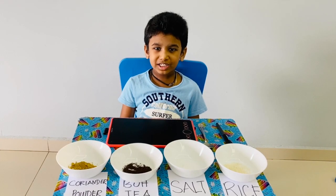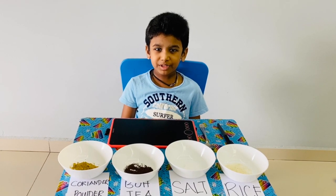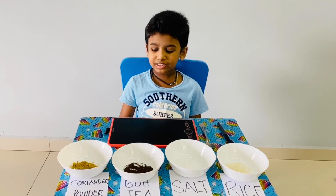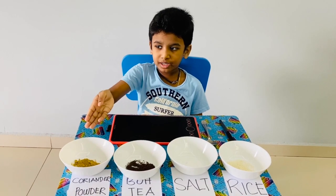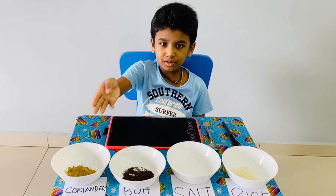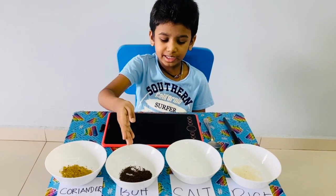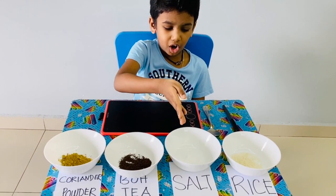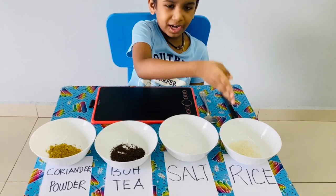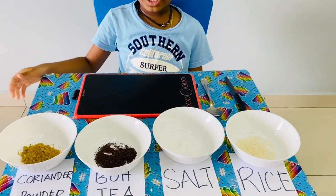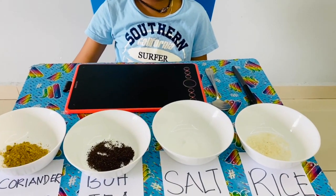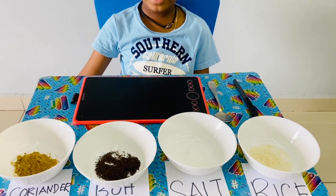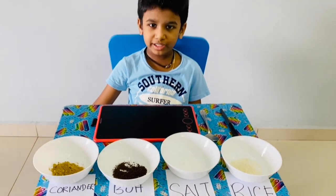Okay friends, now let's see together what we have. First, I have a coriander powder, tea, salt, and rice. Now let's pour water and mix together and see what happens to all these.